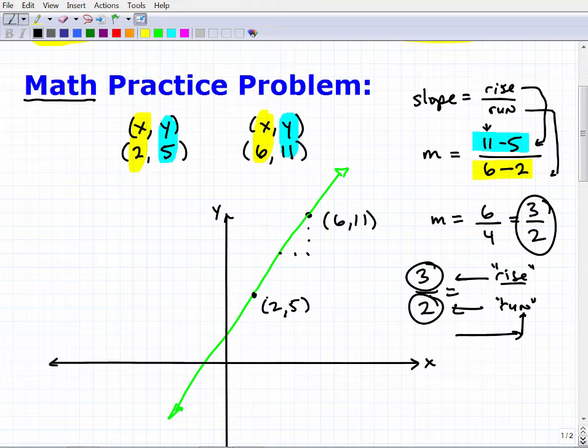Now I could do that anywhere on the line. So let's start here. For every 2 I go out, I go up 1, 2, 3. So here I can say, okay, this line goes out 2. 1, 2. And for every 2 it goes out, it goes up 3. 1, 2, 3.